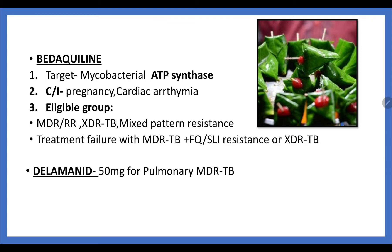At last, the final line of drugs: Bedaquiline and Delamanid. Bedaquiline targets mycobacterial ATP synthase. It is contraindicated in pregnancy and arrhythmia. It is eligible for patients with MDR-TB, XDR-TB, mixed pattern of resistance, or treatment failure with MDR-TB plus fluoroquinolone and second-line injectable drug resistance.